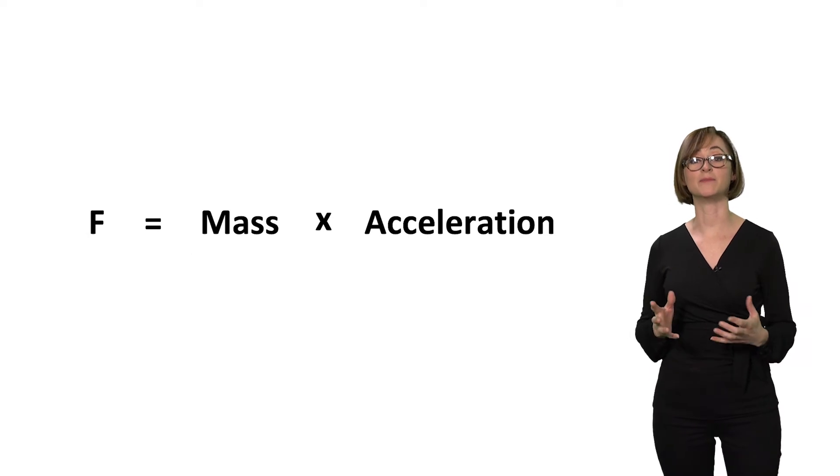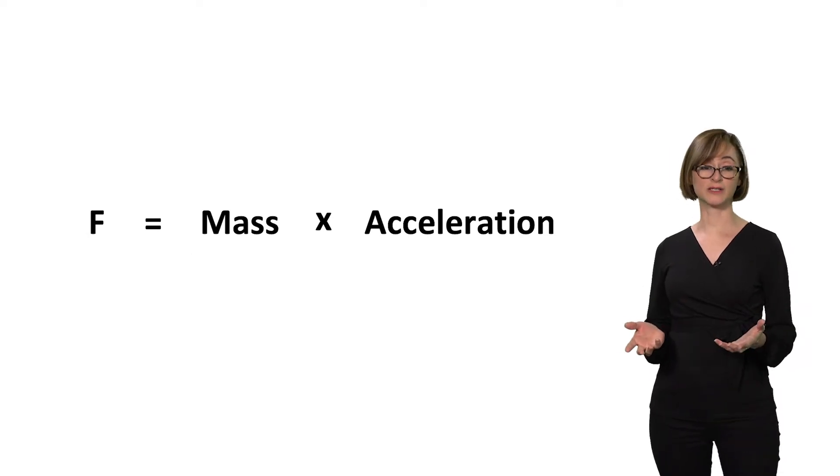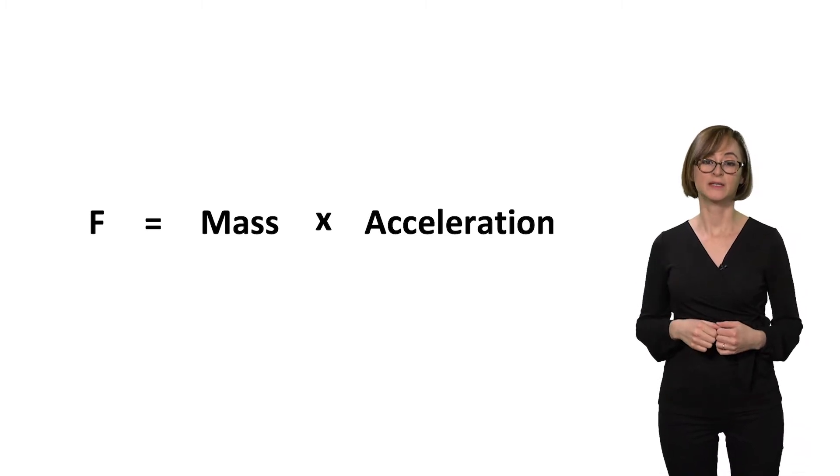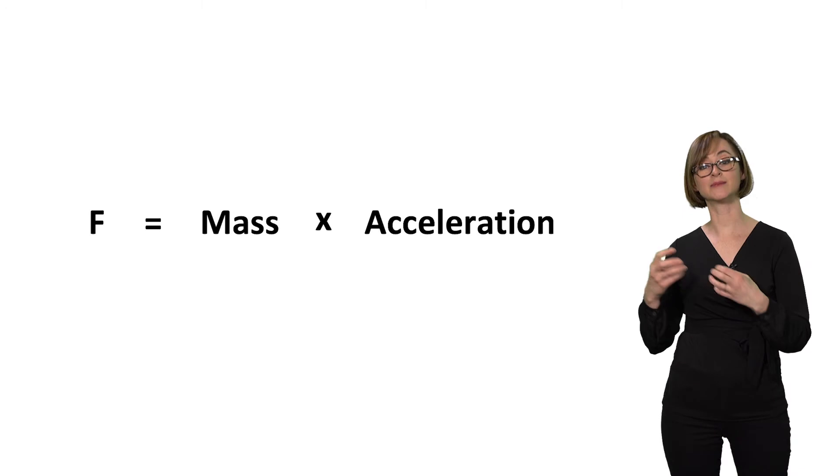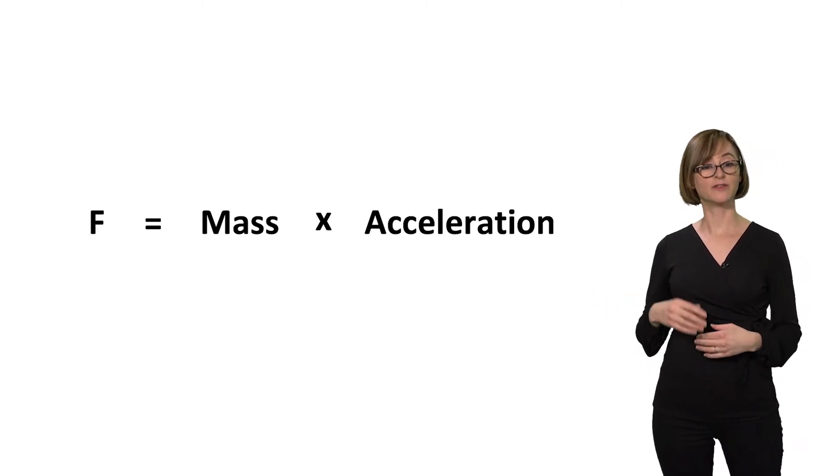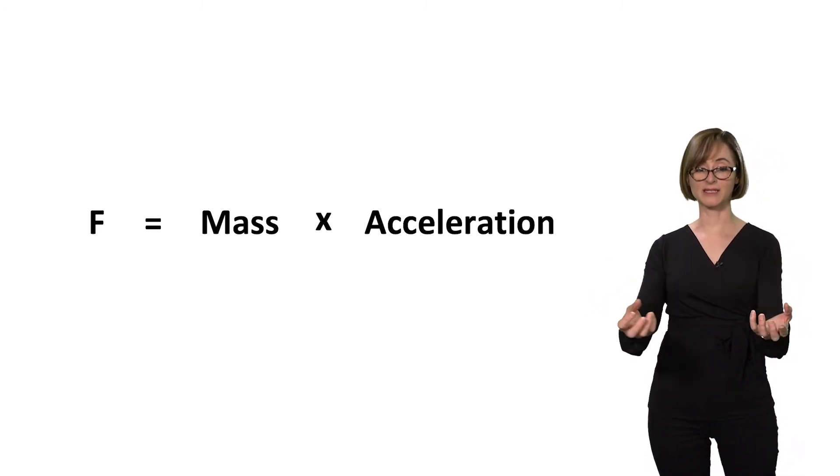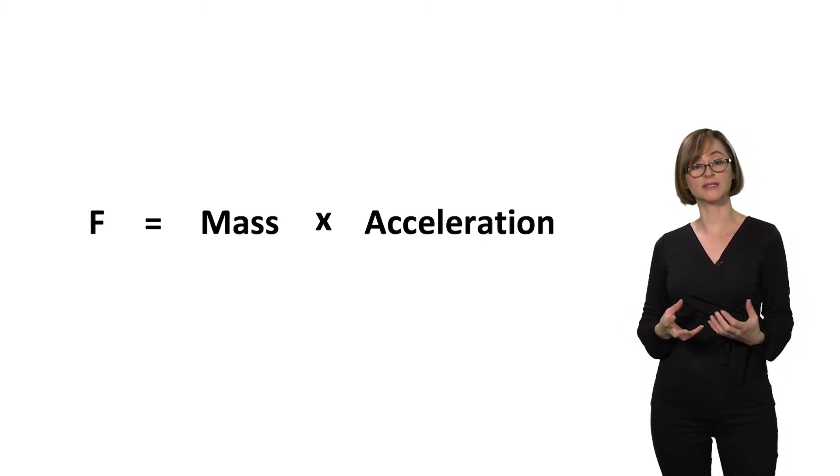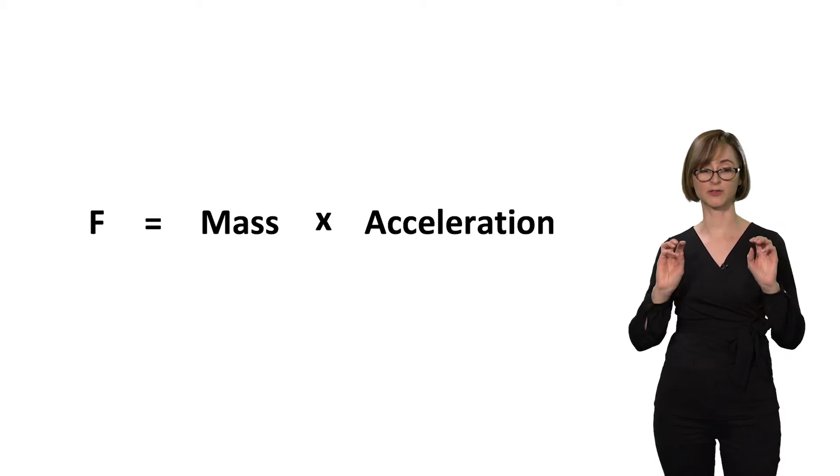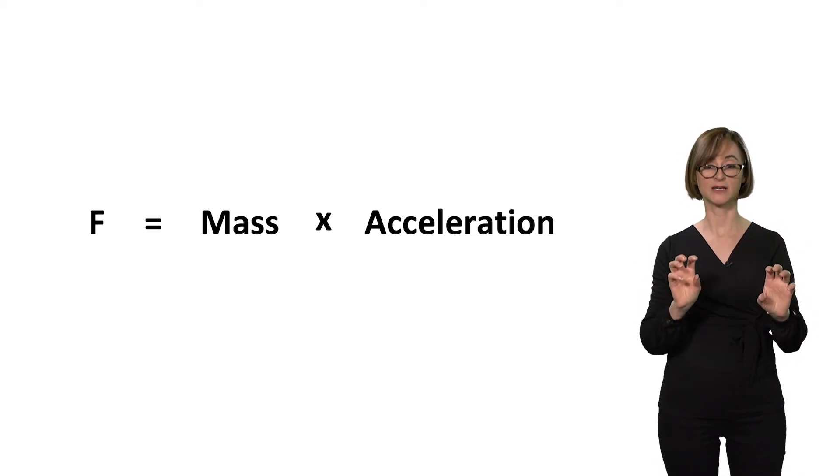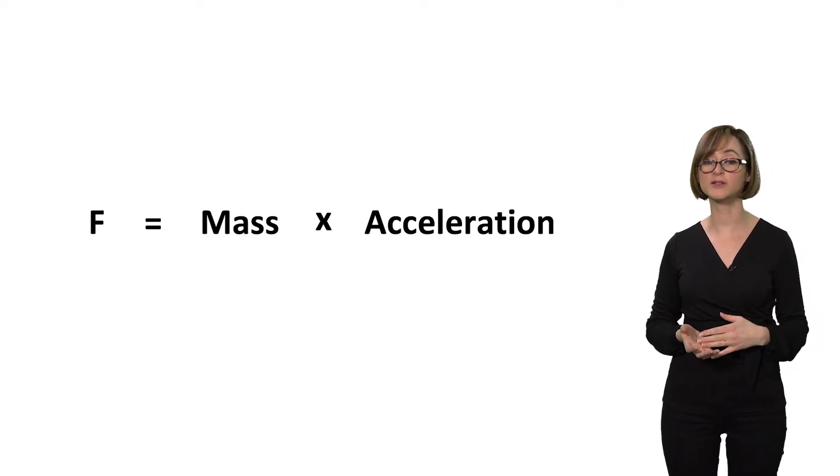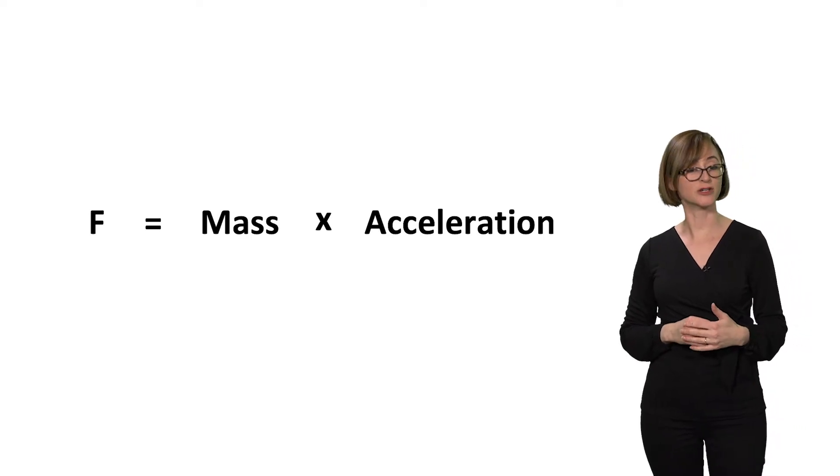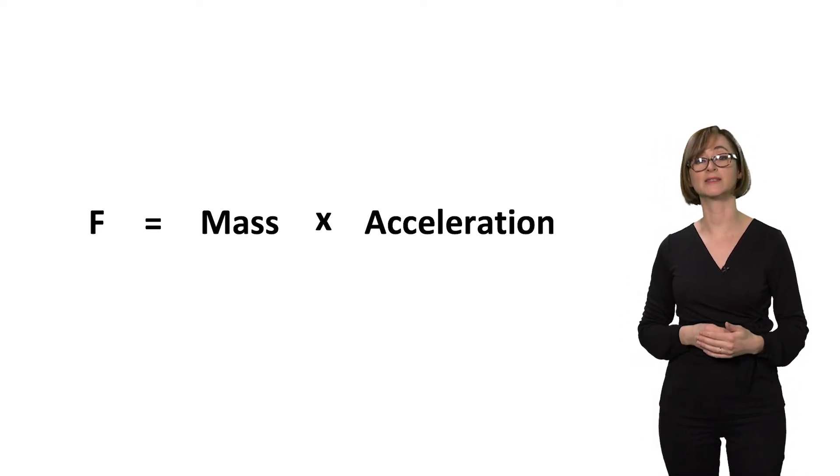I mentioned that force also has a magnitude. How strong a force is depends on two things, the mass of the object and its acceleration. The magnitude of a force is equal to the mass of the object times its acceleration. So if a more massive object and a less massive object are traveling at the same acceleration, like a tennis ball and a bowling ball, the bowling ball will exert more force than the tennis ball. However, if two tennis balls are traveling at different accelerations, the one that has more acceleration will exert more force than the one with less acceleration. This relationship was first defined by Sir Isaac Newton and is known as Newton's second law of motion.